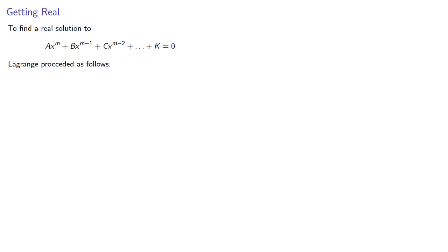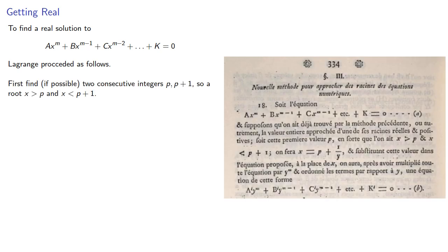To find a real solution to a polynomial equation, Lagrange proceeded as follows. First, find, if possible, two consecutive integers p and p plus 1, so root x is greater than p and less than p plus 1.